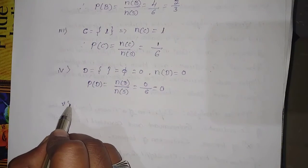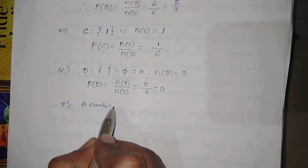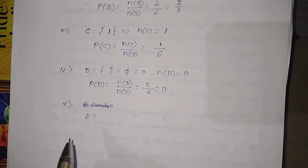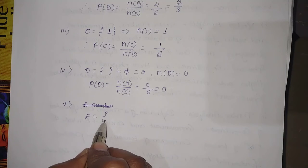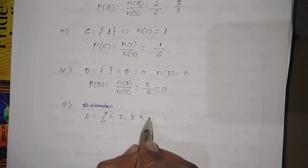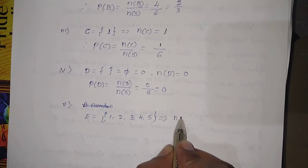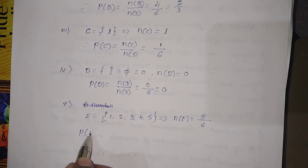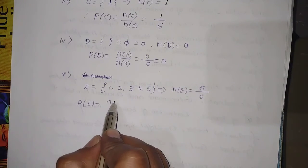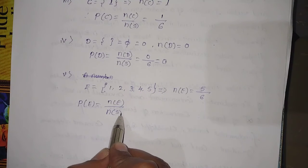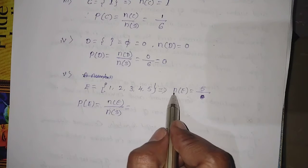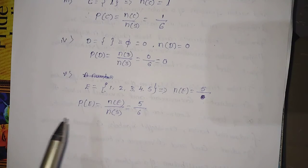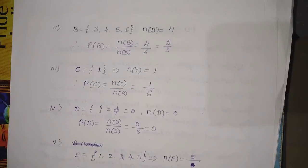Fifth question — a number less than 6 will appear: E = {1, 2, 3, 4, 5}, so n(E) = 5. P(E) = n(E) / n(S) = 5/6. This completes all five sub-questions for the die problem.